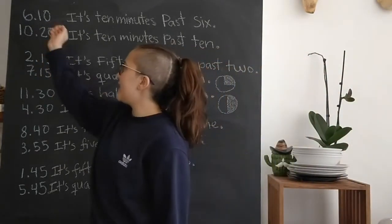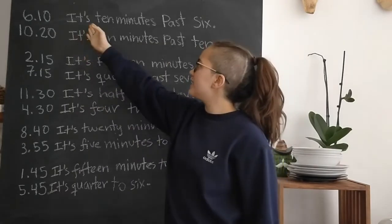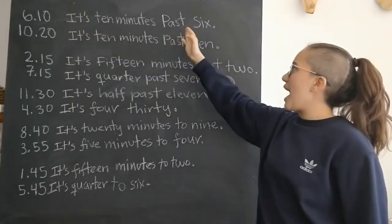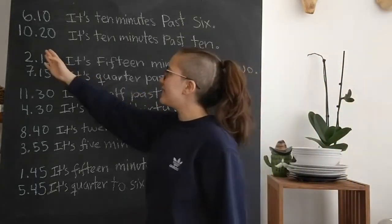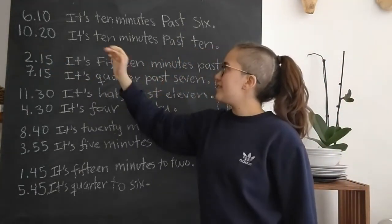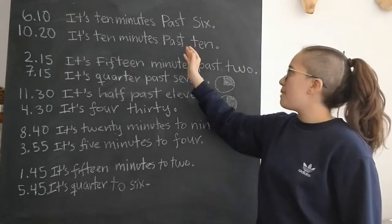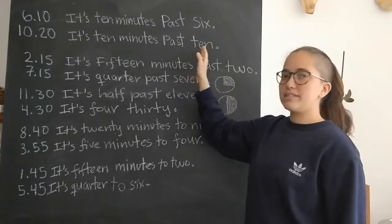So to say six ten, we would say it's ten minutes past six, past six. To say ten twenty, we would say it's ten minutes past ten, past ten.